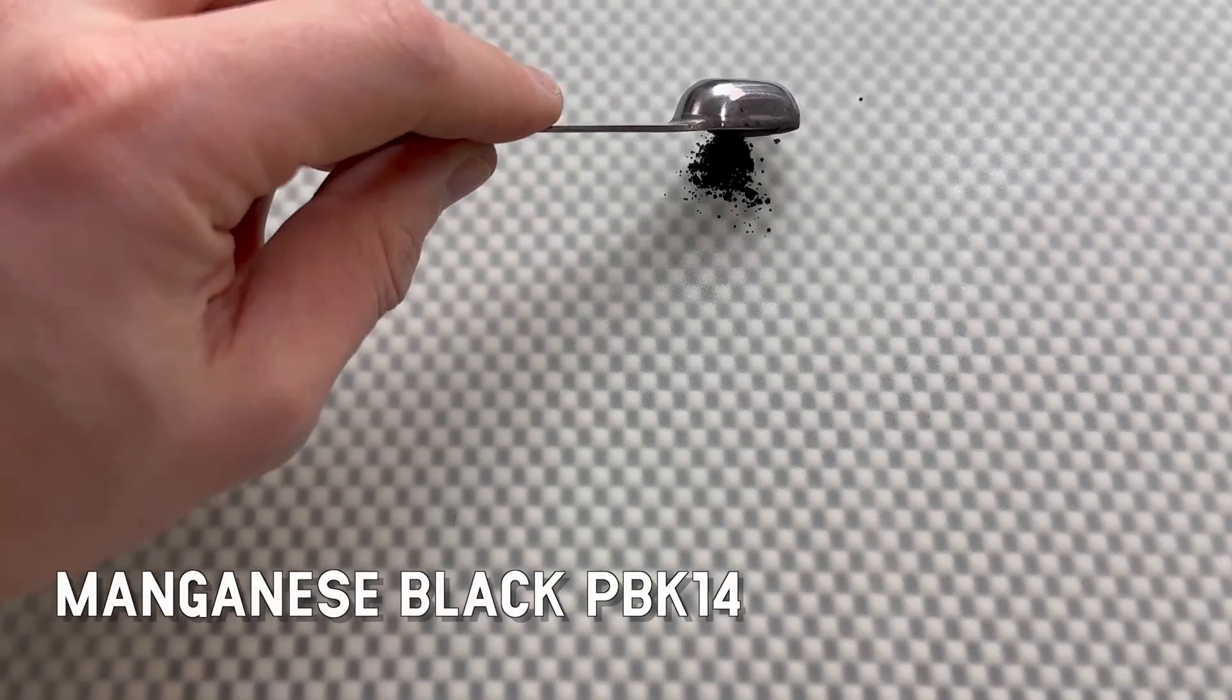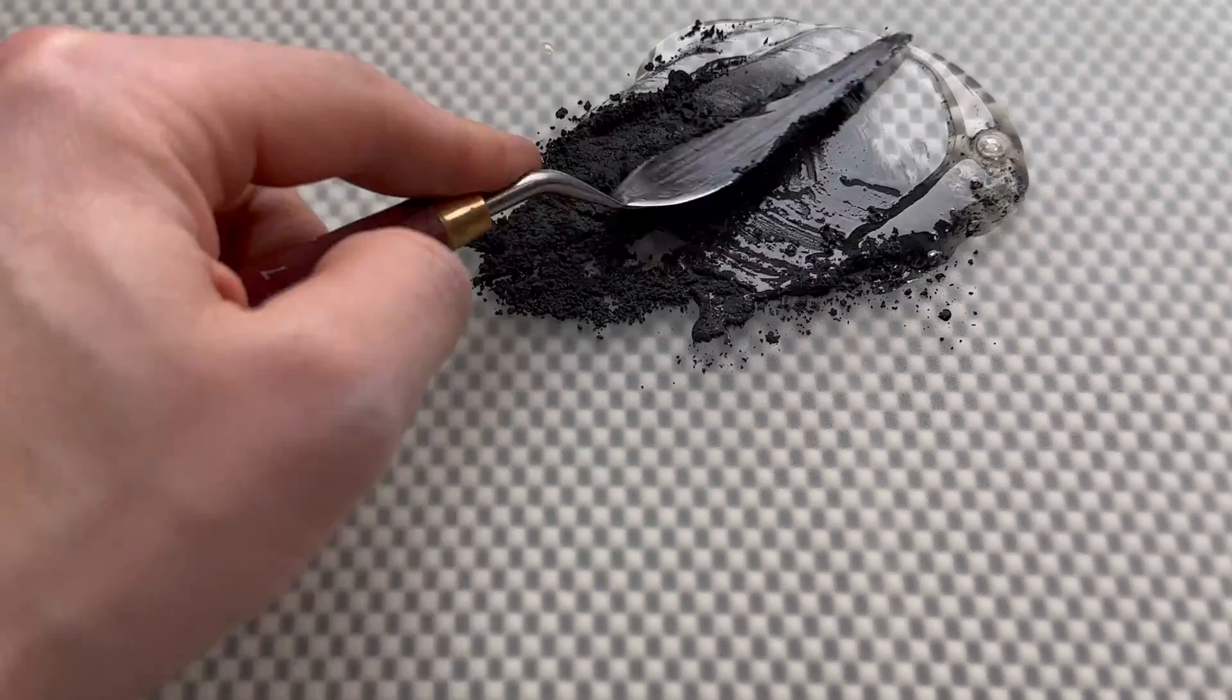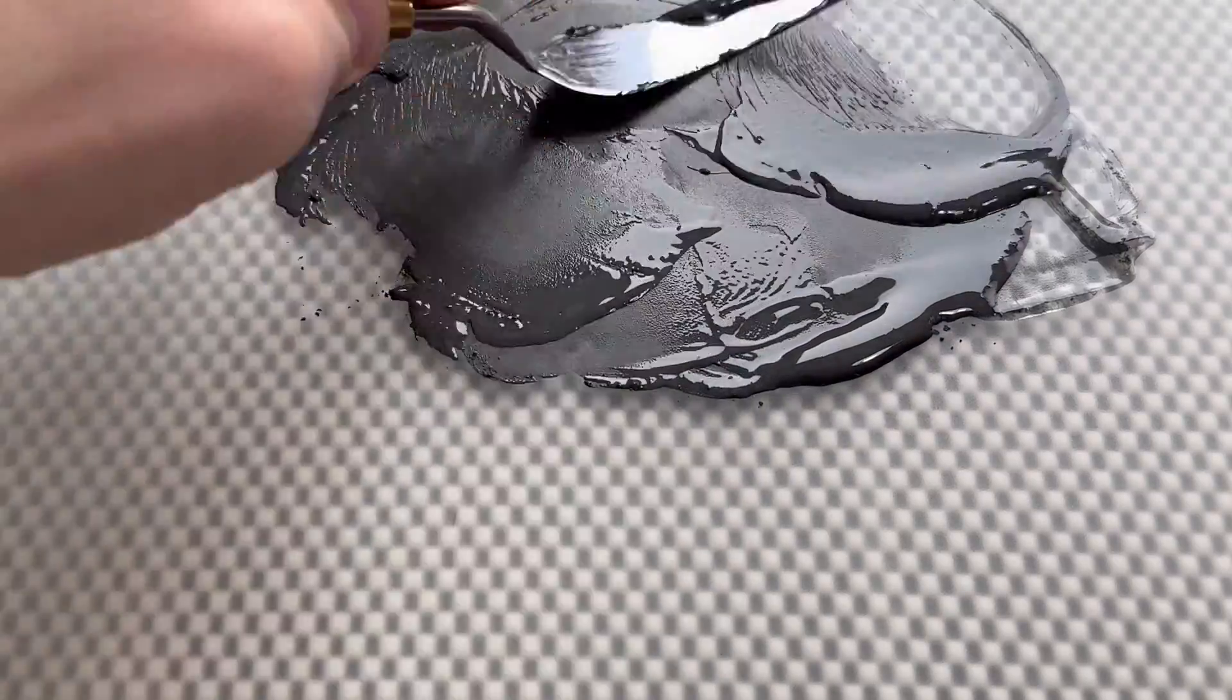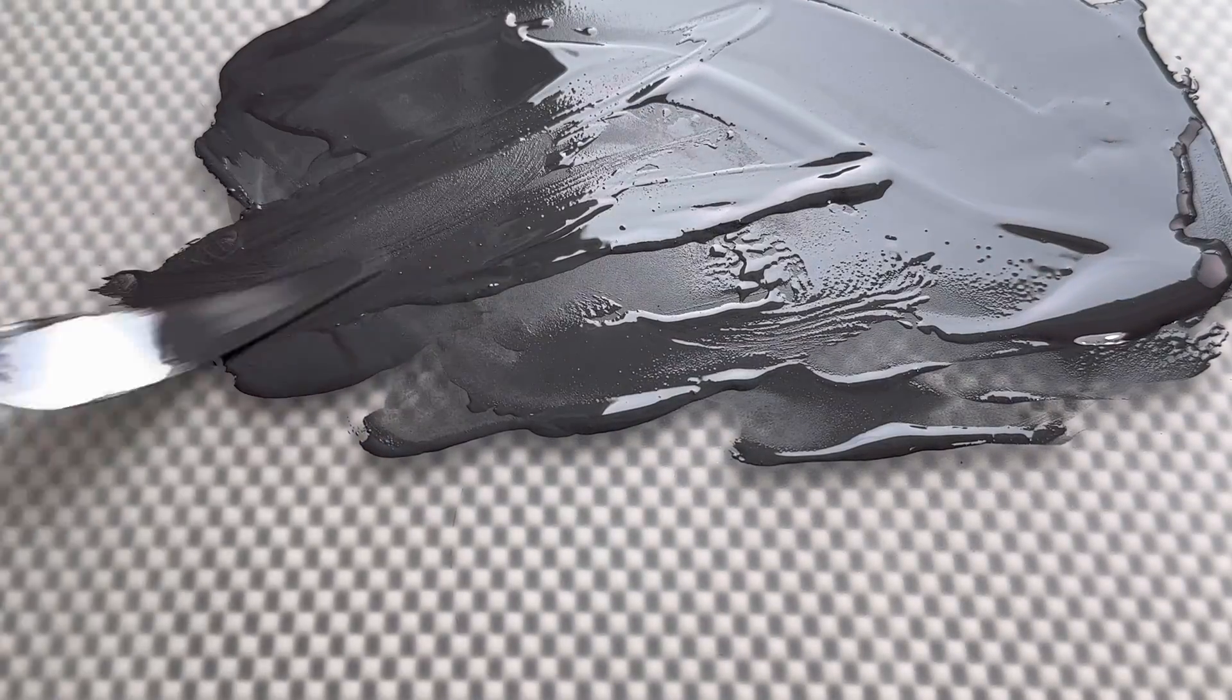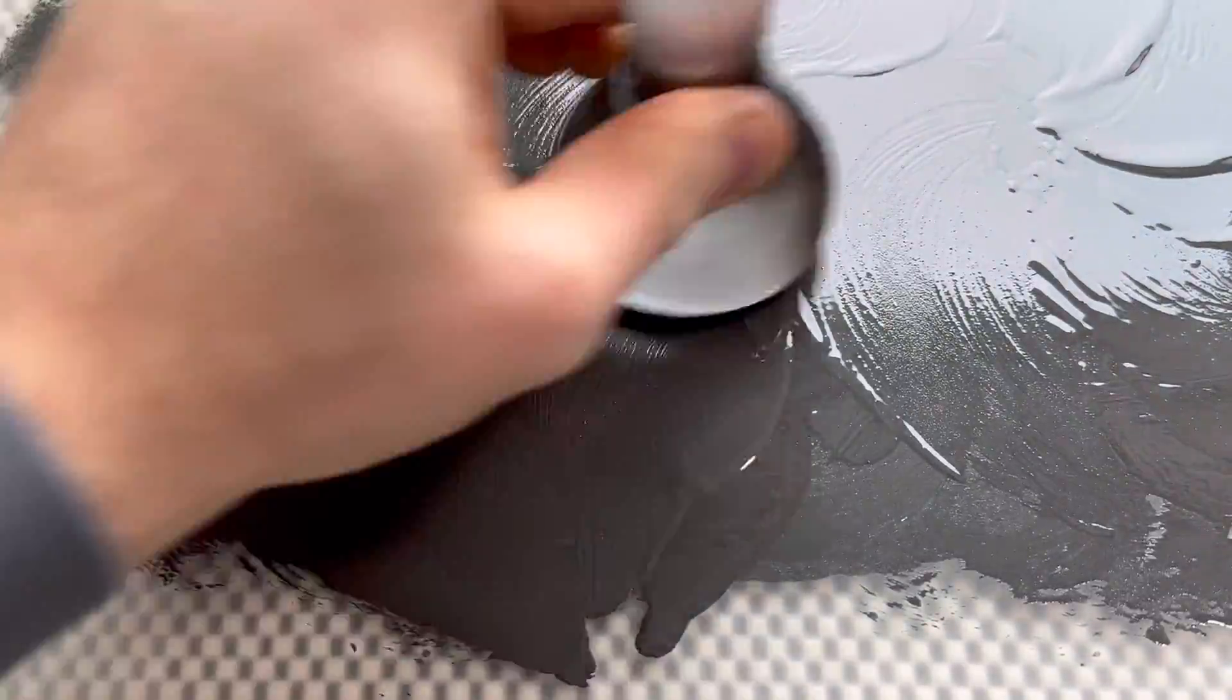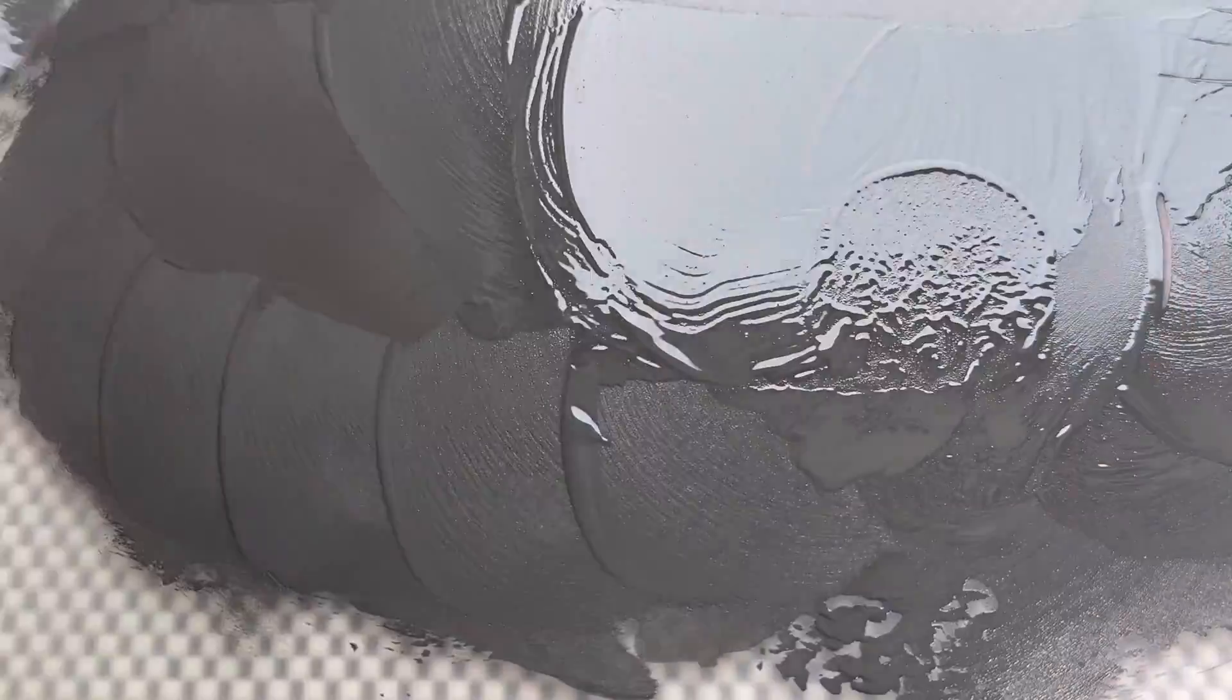On to the blacks—PBk14, manganese black. It occurs naturally as pyrolusite, but commercially available pigments are usually a synthetic mix of manganese ores when it's not named after the natural material. It also goes by black umber, cement black, or manganese dioxide. It is a very deep grayish black, not a perfect black—that will be the next pigment in my opinion—but it is a very dark neutral gray. It's a beautiful pigment, although not something that I would offer in my line of paint, I think. I'm not sure—looking at it, it's quite neutral. Maybe I will, who knows.